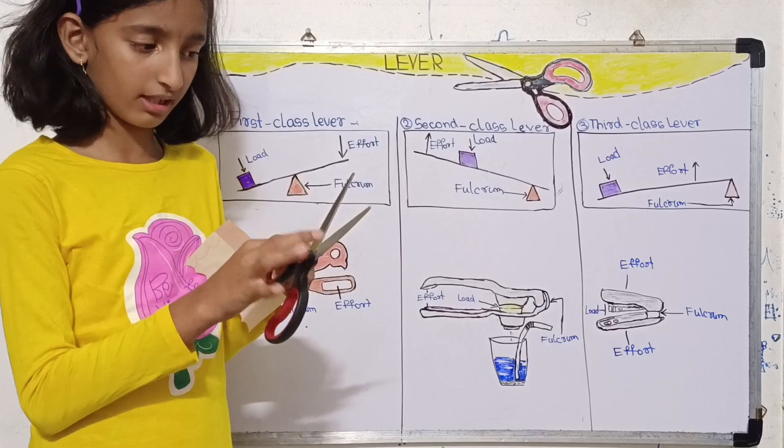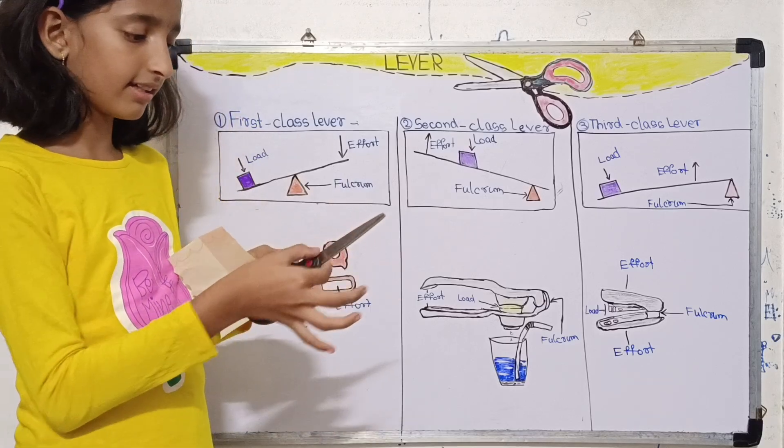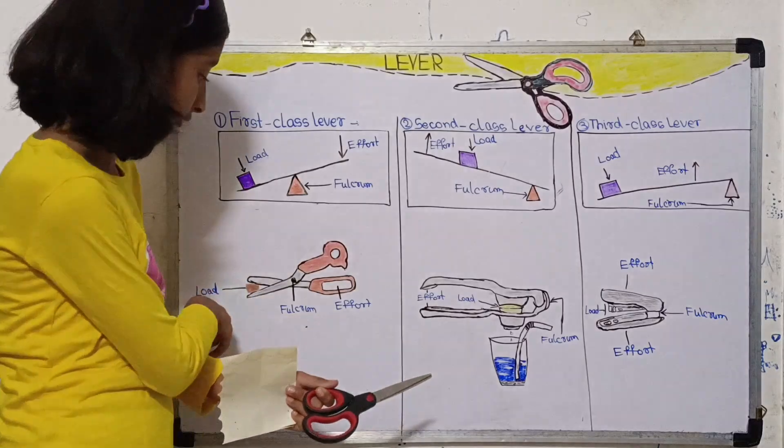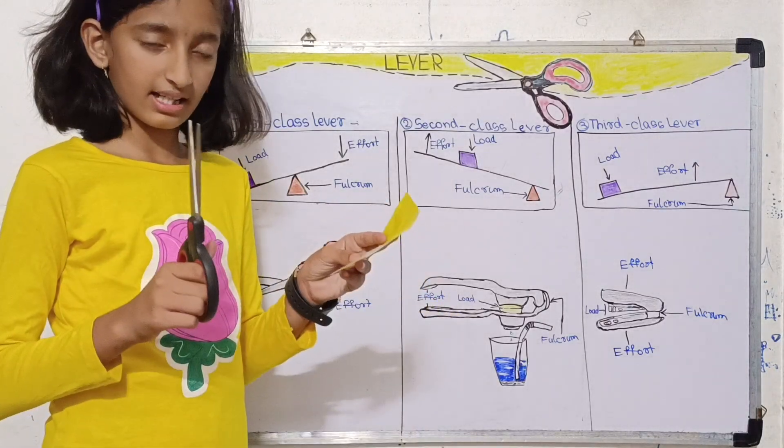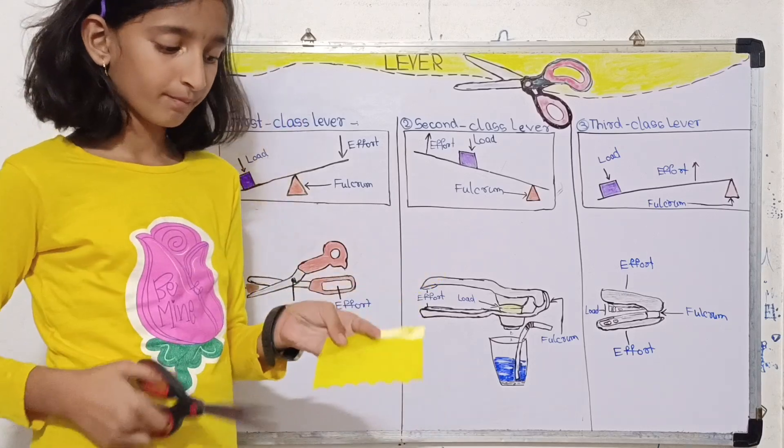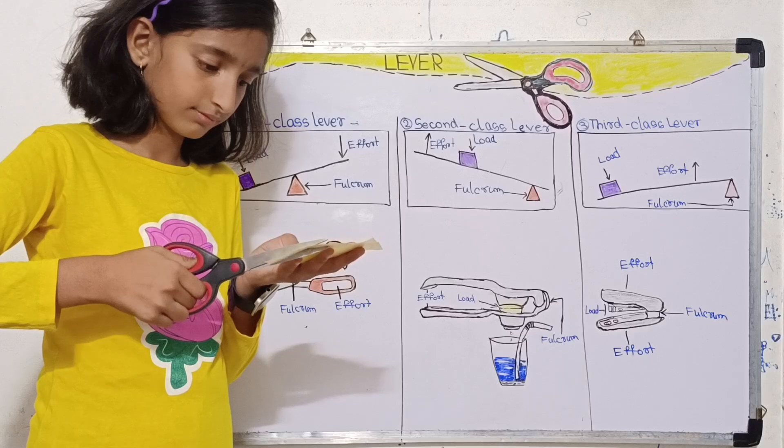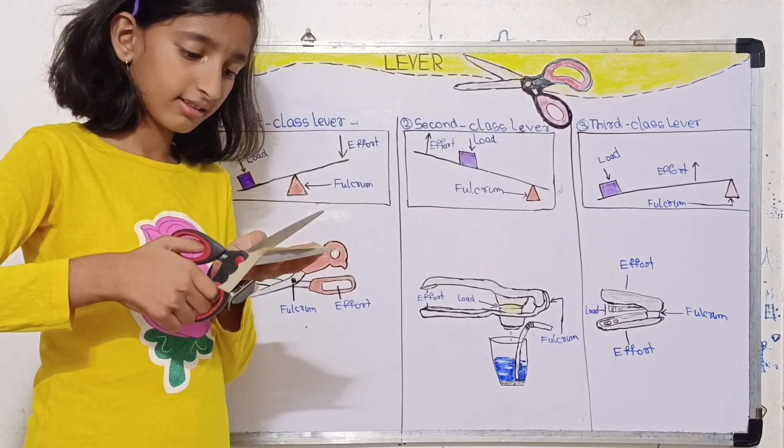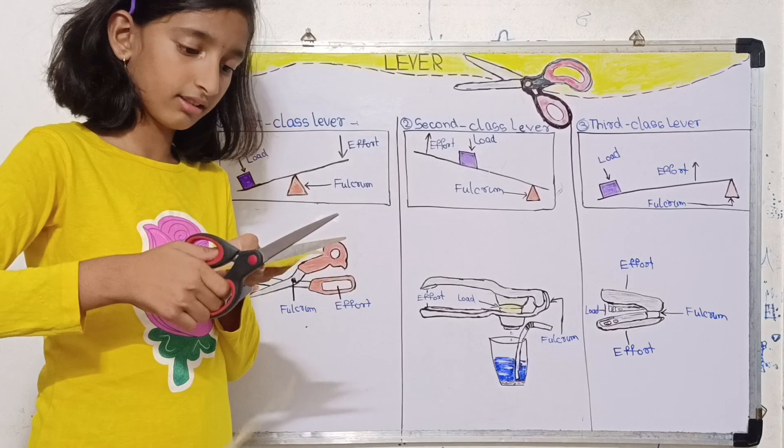And then here the load - this paper is the load and we cut it, so the work is being done on this load. So let's cut this paper. You can see our effort being applied and the paper being cut.